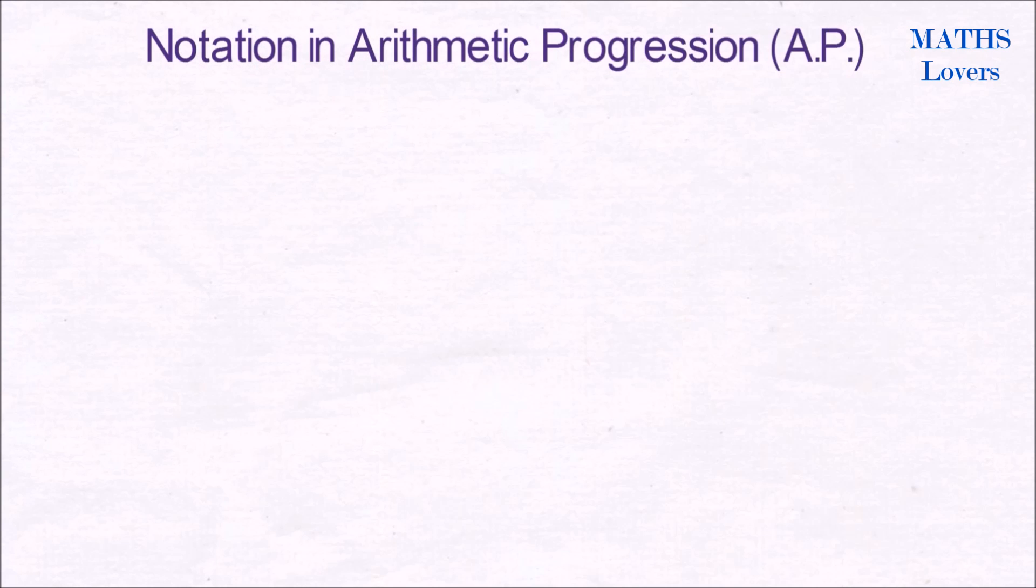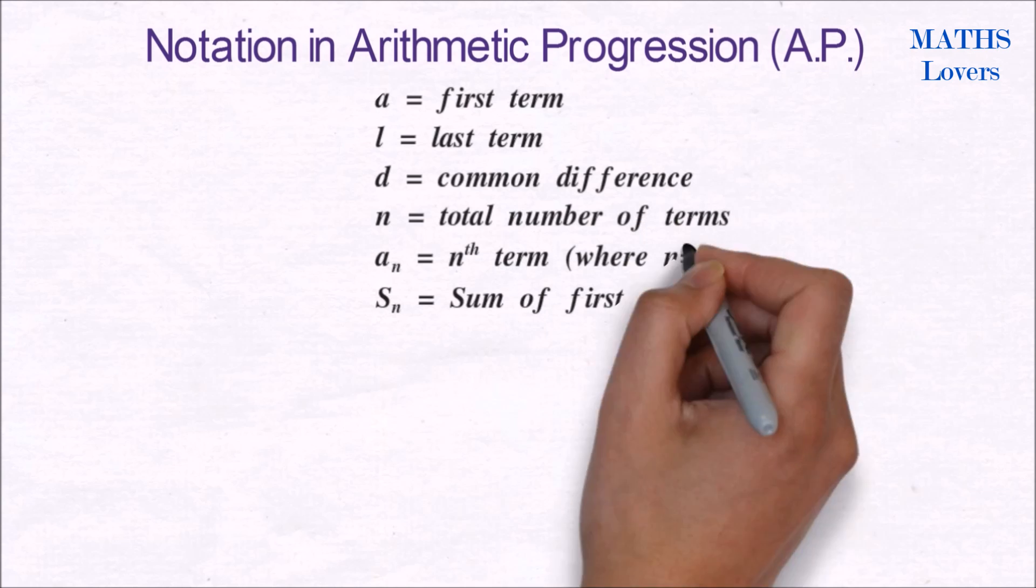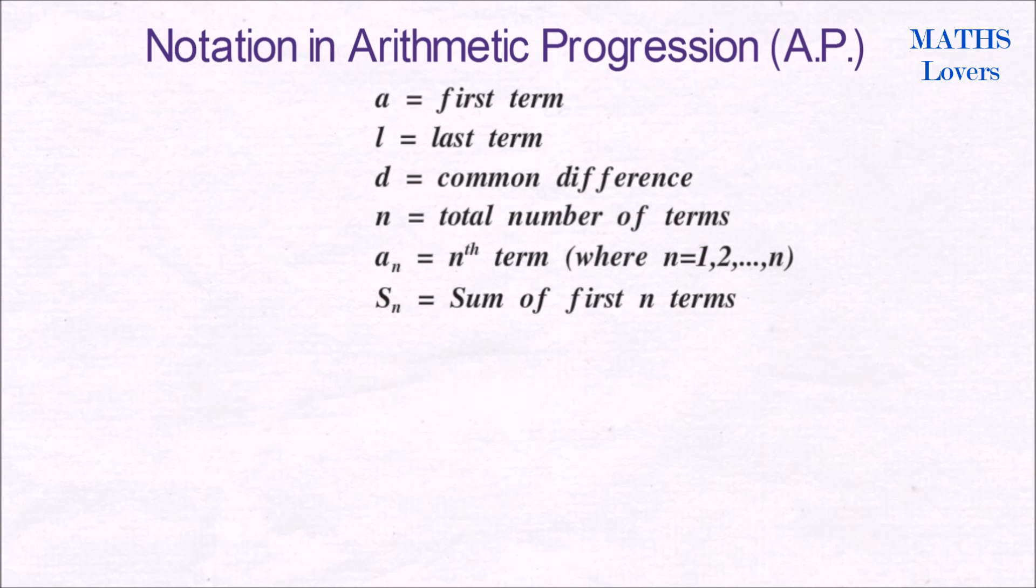Here are some notations used in AP. First term is represented by a, last term by l, common difference by d, total number of terms by n, nth term by a_n. For example, second term will be a_2, third term will be a_3, and so on. And sum of first n terms by S_n.